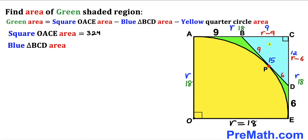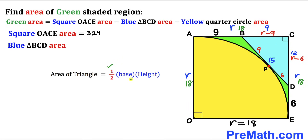Next, we calculate the area of right triangle BCD using area = ½ × base × height. The base is 9 and the height is 12, so the area is ½ × 9 × 12 = 54 square units.